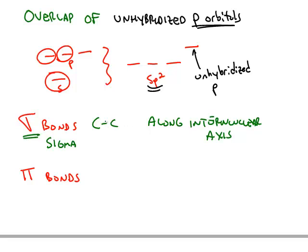So that just means you have the nucleus of one atom, the nucleus of the other. This bond is between those two nuclei. A pi bond is always from unhybridized p orbitals overlapping.